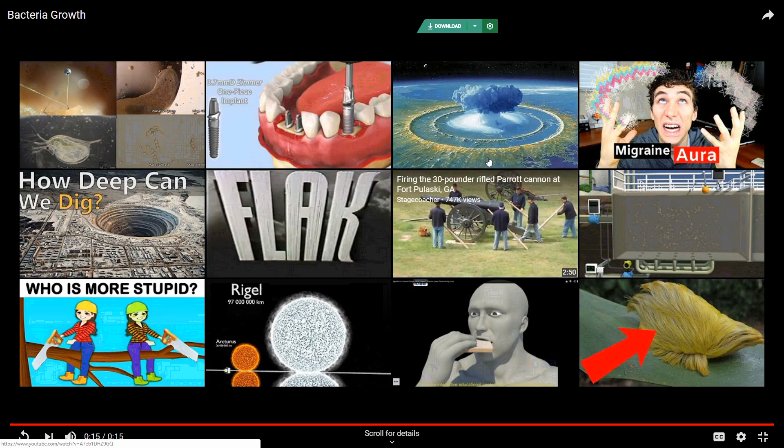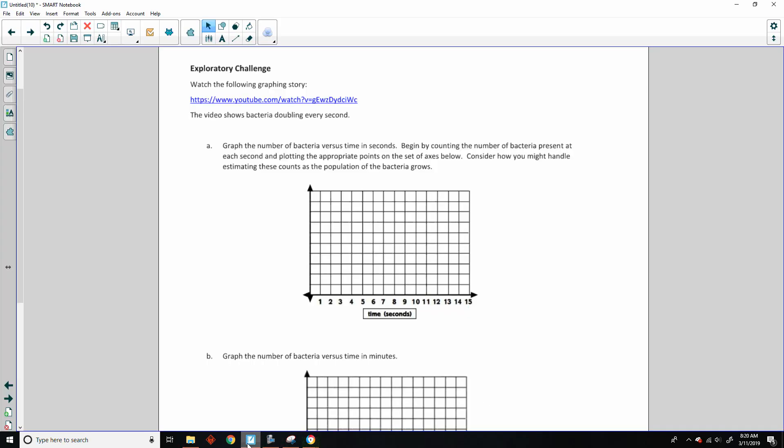Okay. So there's the video. And it says to graph the number of bacteria versus time in seconds, begin by counting the number of bacteria present at each second and plotting appropriate points. So I wrote it down, and here is my table. So if I have a table at 0, when we started, we had 2 bacterium. At 1 second, we had 4. At 2 seconds, we had 8. At 3 seconds, we had 16. At 4 seconds, we had 32, assuming, approximating, because it said it doubles every second.